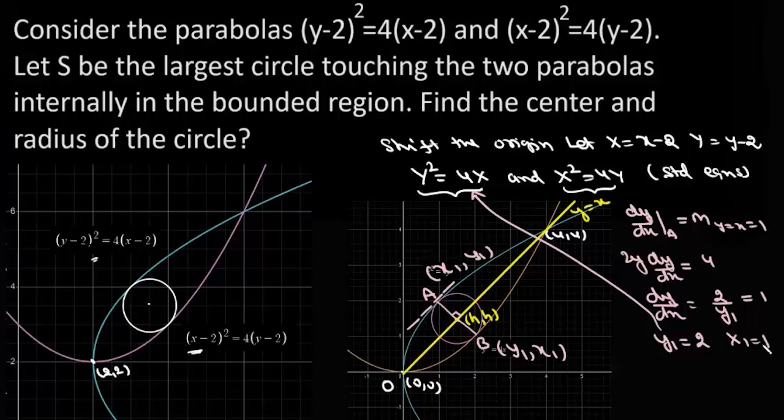Now if we put y₁ as 2 we get x₁ as 1, so the coordinate of point A is (1, 2) and from symmetry coordinate of point B is (2, 1). The center C is the midpoint of AB which is (3/2, 3/2), so the center of the largest circle lies at (3/2, 3/2).